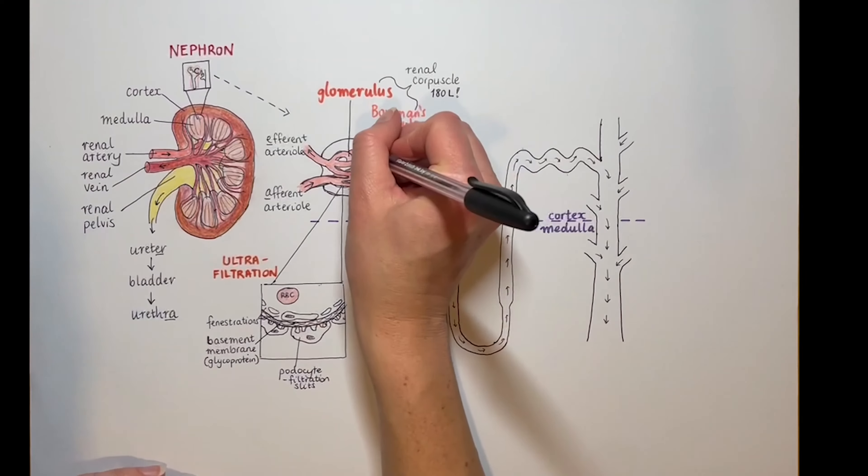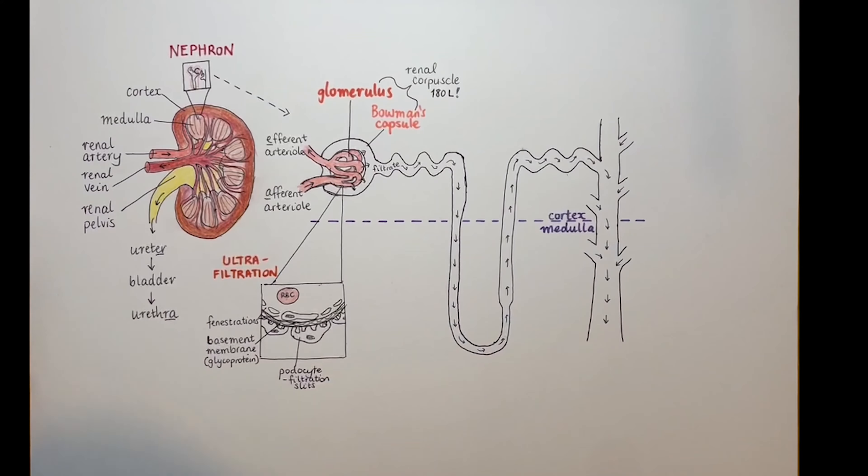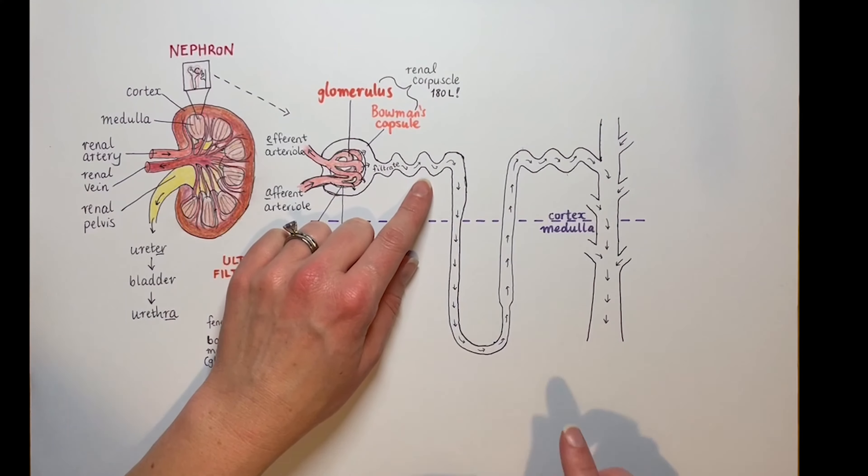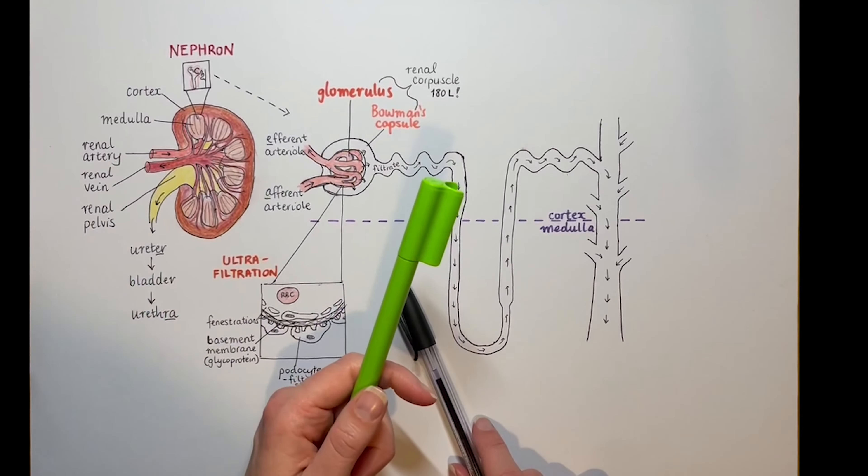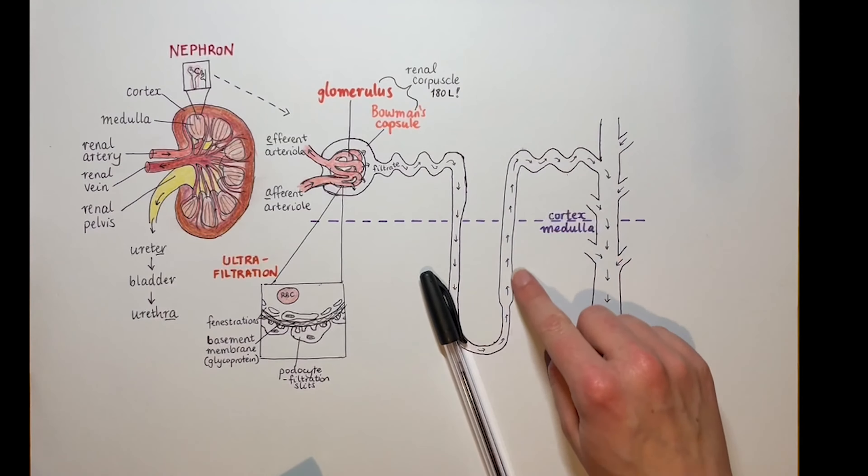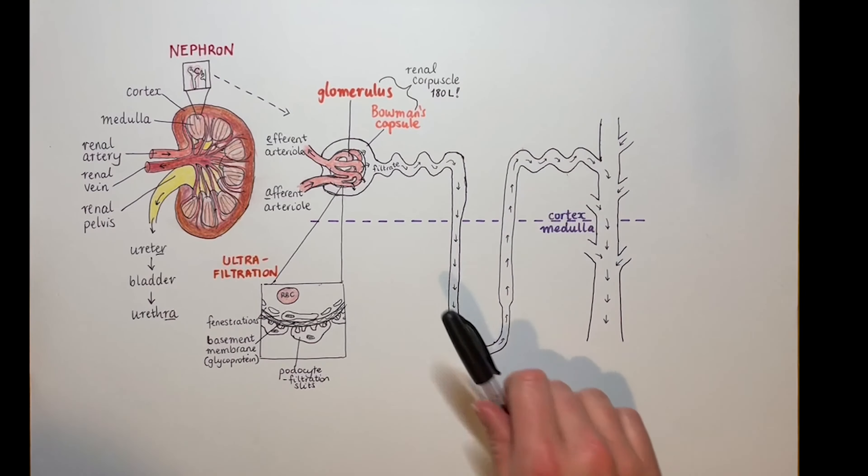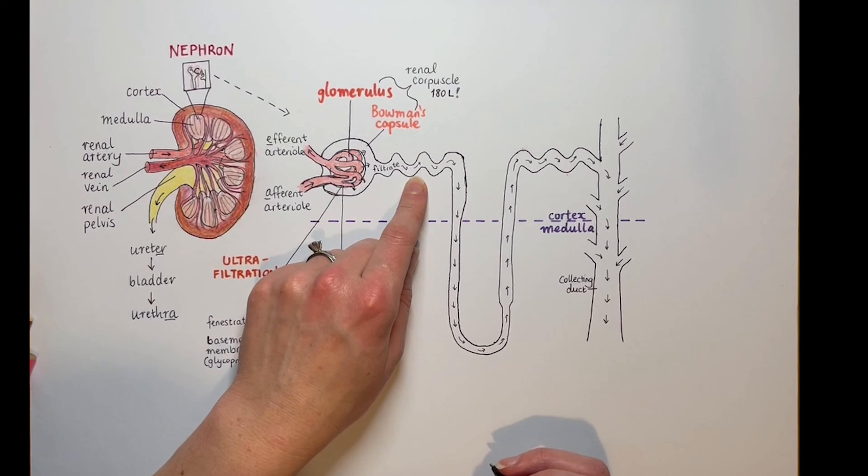So as you can imagine, most of it needs to be saved. Now the filtrate is going to eventually become wee, so it's tempting to color-code it yellow, but I've picked green for salt as a random choice to avoid confusion later. It's headed this way on its journey. The filtrate here, and actually by the time it's at the collecting duct, maybe I will color it yellow in that bit. But let's go back to the start.